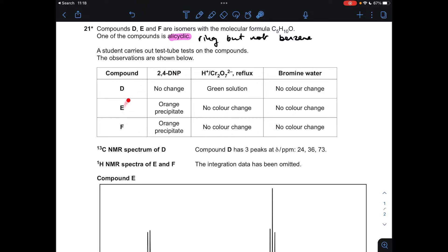So the first piece of information we'll look at is the results of these test tube reactions. So we've got reaction with 2,4-DNP, acidified dichromate six ions under reflux, and bromine water. So we'll deal with that column first, and I'll just annotate this table. So D, no change with 2,4-DNP, whereas E and F both gave the orange precipitate. So no change with 2,4-DNP means that it can't have a carbonyl group in it, so it's not an aldehyde or it's not a ketone, whereas E and F does give the result. So these could be aldehydes or ketones from this information.